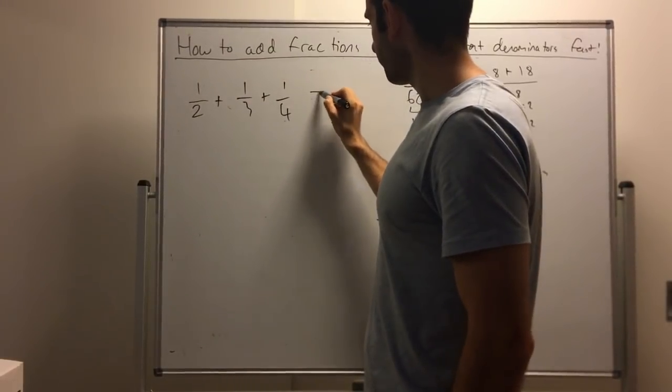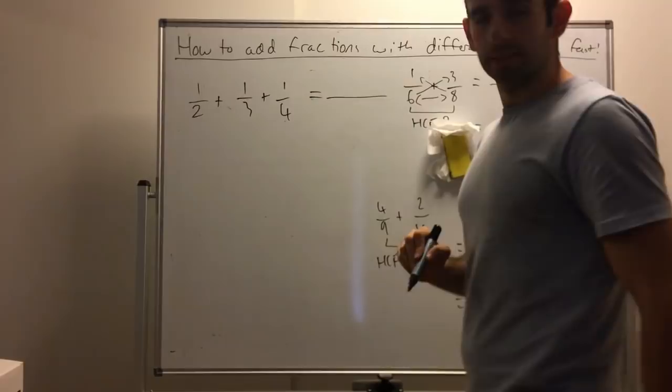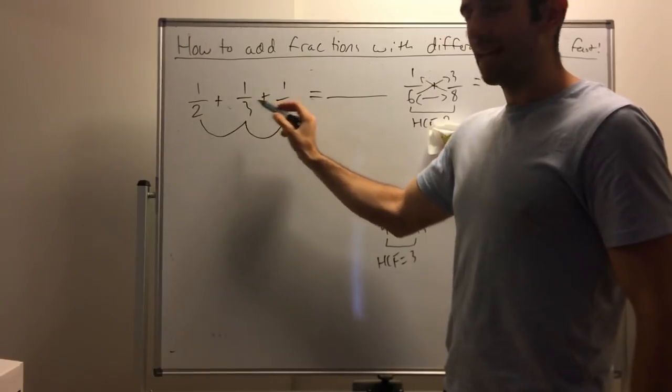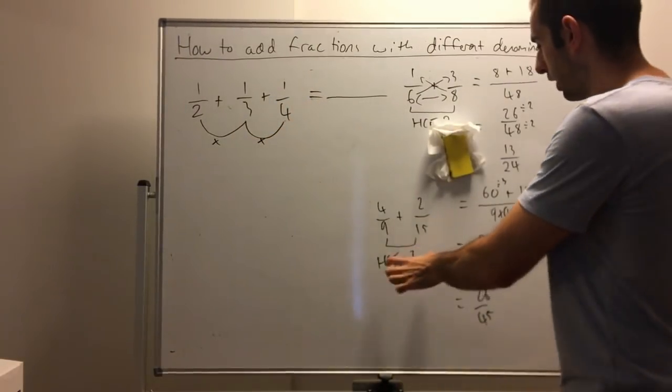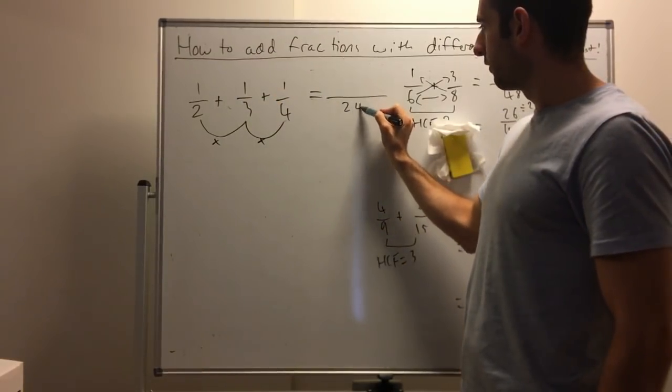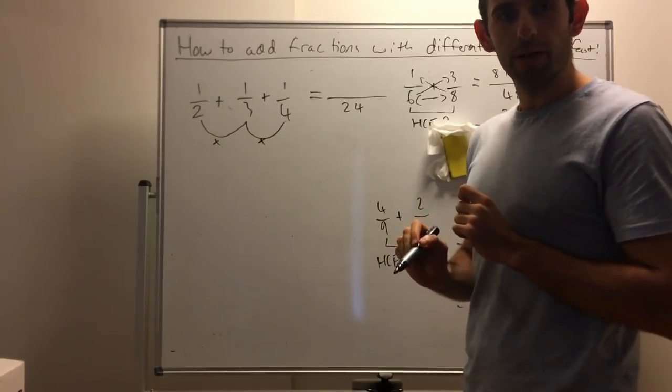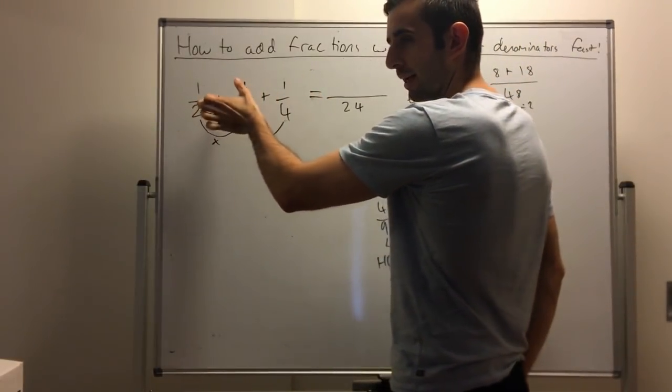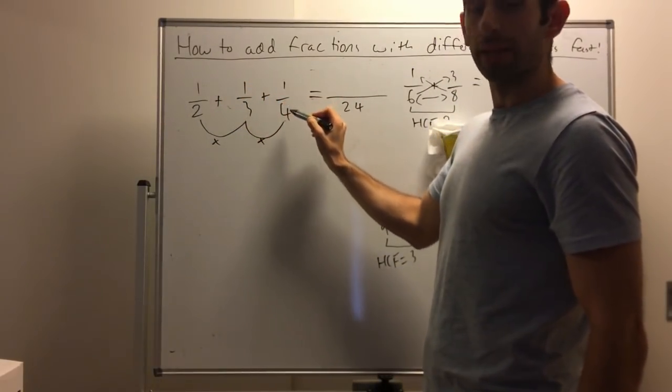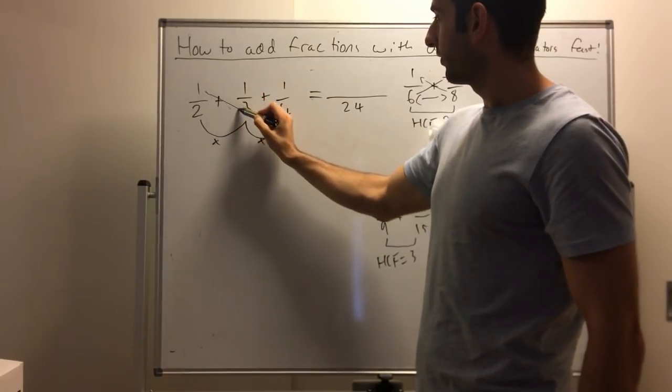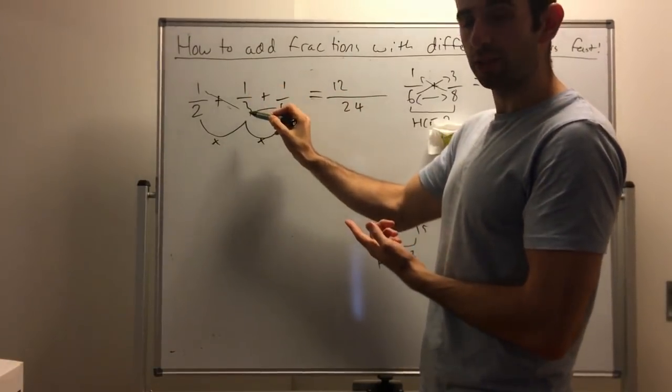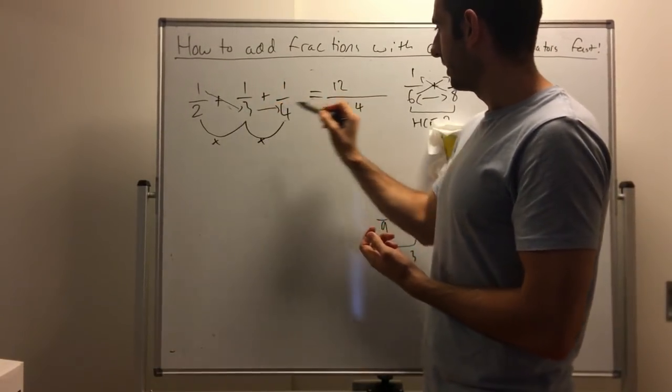We use the same process, but in a slightly different way. We times each denominator together. Same process, times each denominator together: 2 times 3, 6 times 4, 24. But then what do we do on top? What you're going to do is numerator 1 times each other denominator. So 1 times 3 times 4. What's that? 12. 1 times 3 is 3, times 4 is 12.